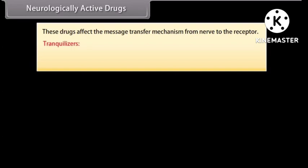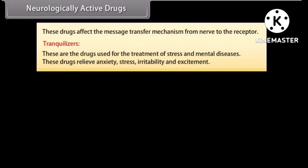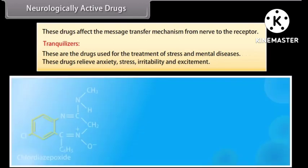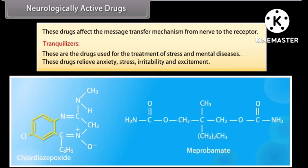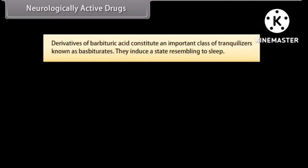Neurologically active drugs affect the message transfer mechanism from nerve to receptor. Tranquilizers are drugs used for the treatment of stress and mental diseases. These drugs relieve anxiety, stress, irritability, and excitement. For example, chlordiazepoxide and meprobamate are mild tranquilizers. Derivatives of barbituric acid constitute an important class of tranquilizers known as barbiturates — they induce a state resembling sleep. For example, veronal and luminal.